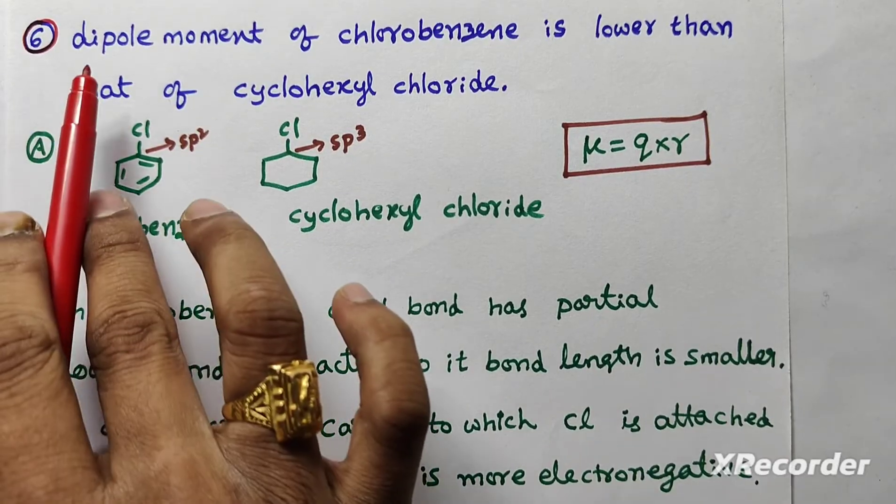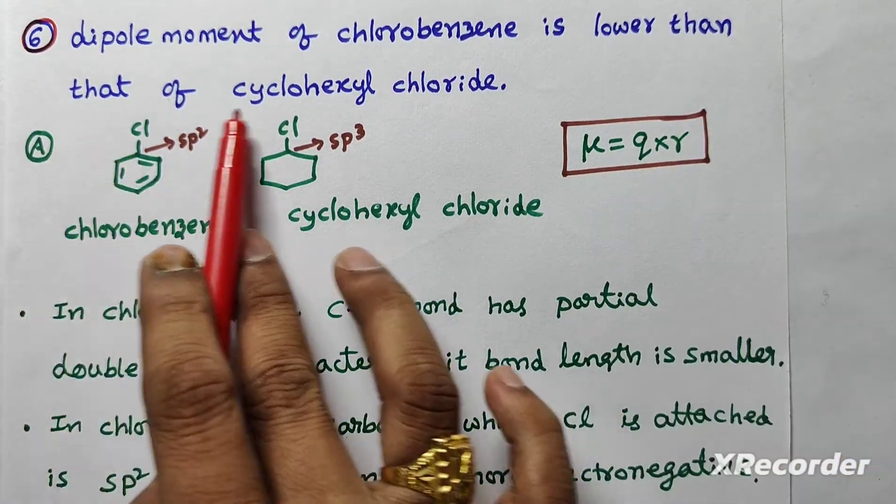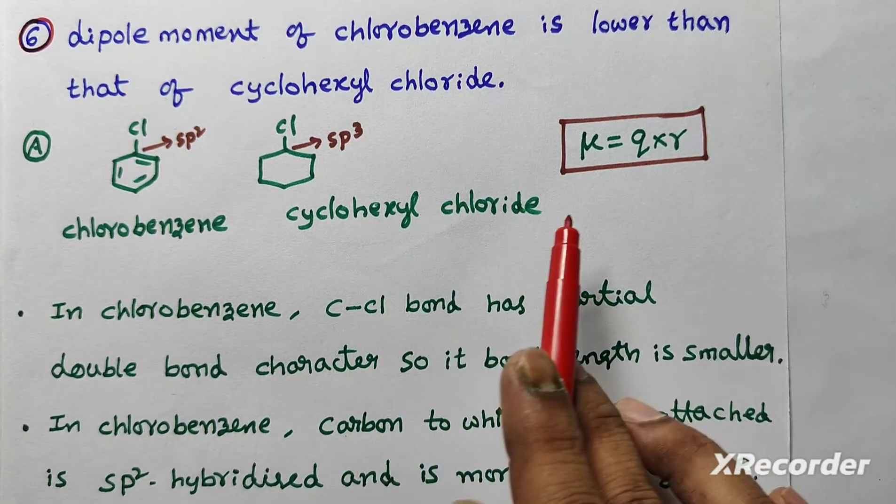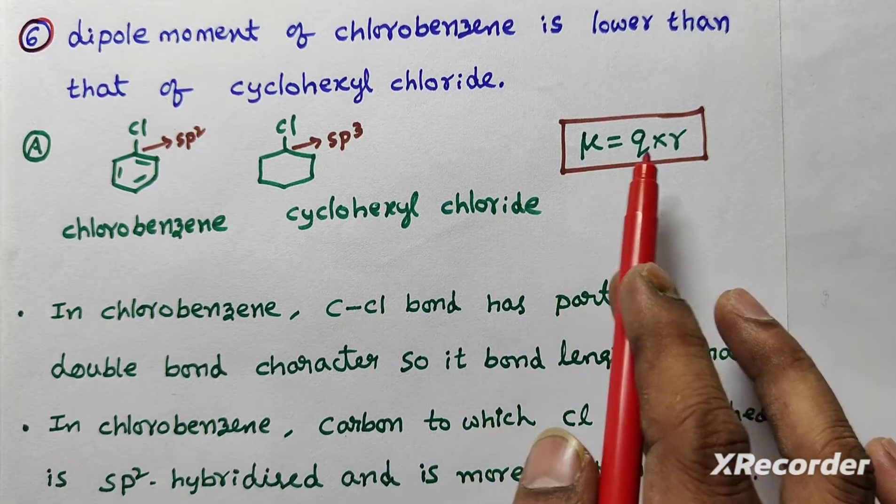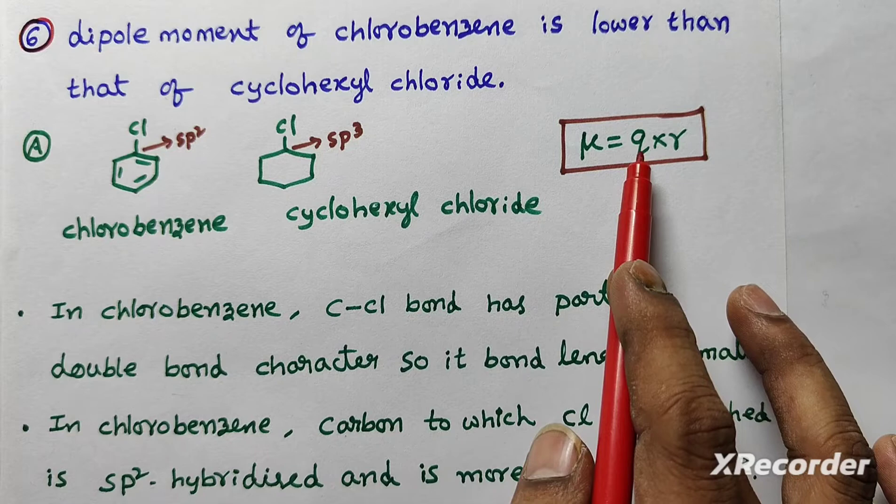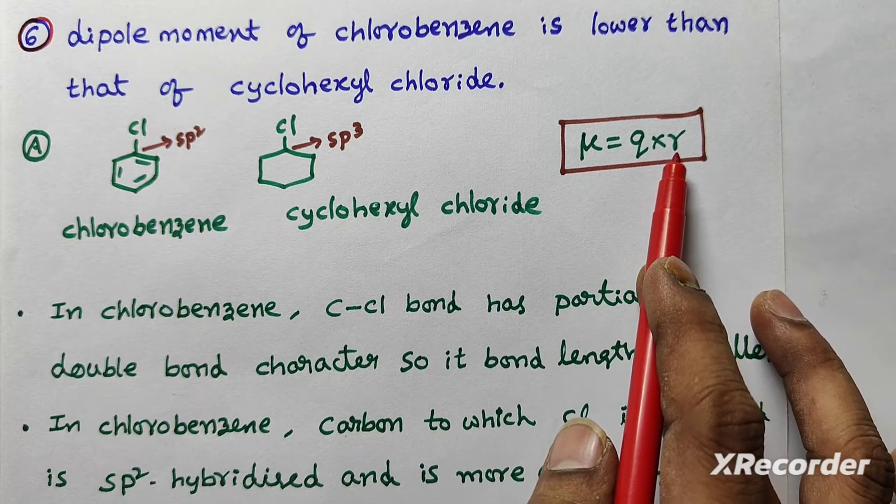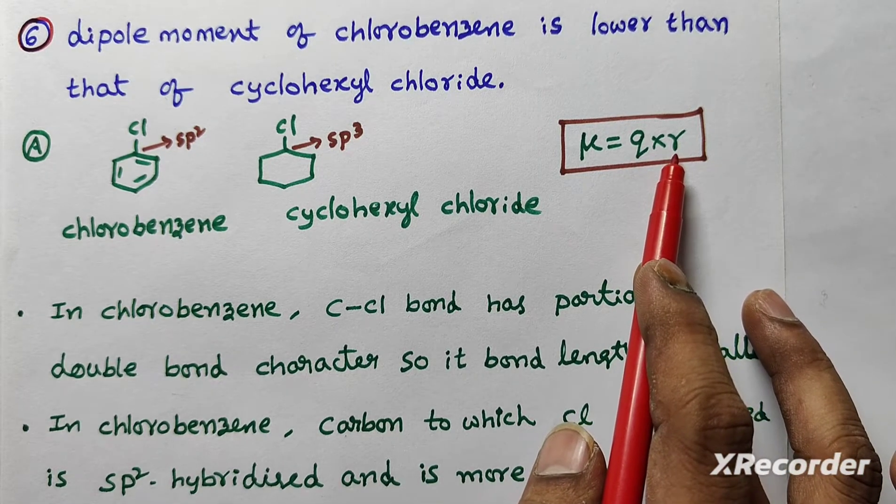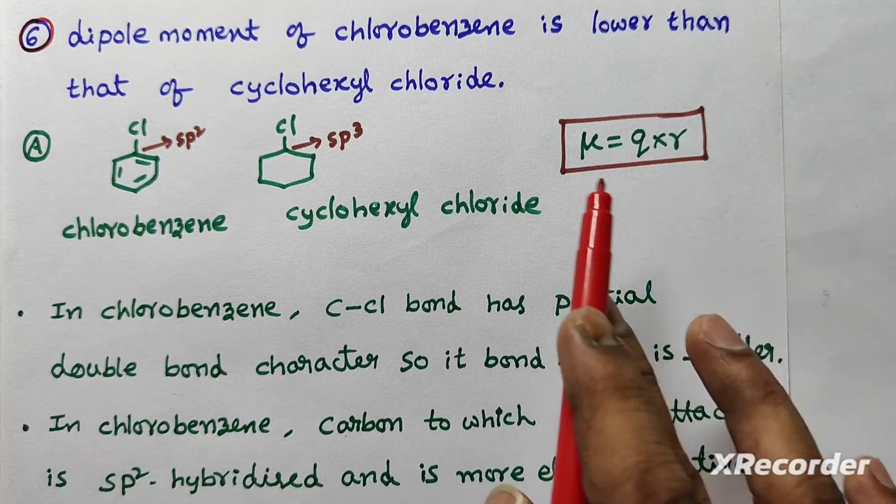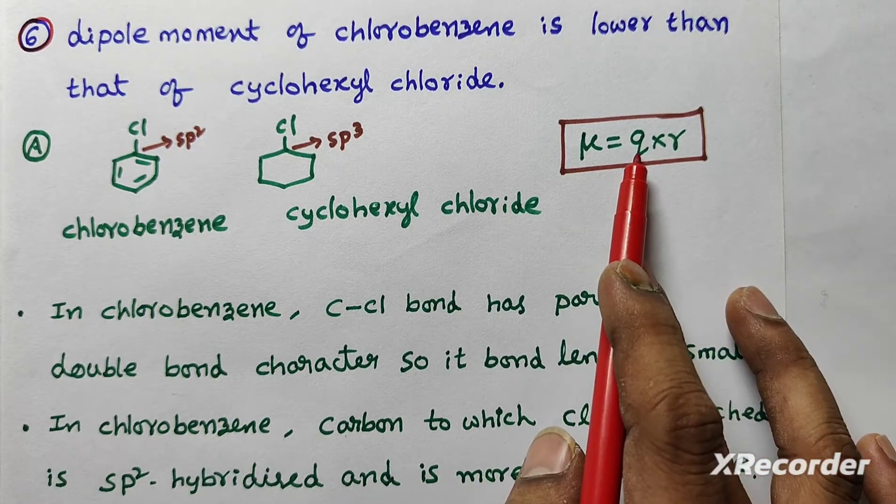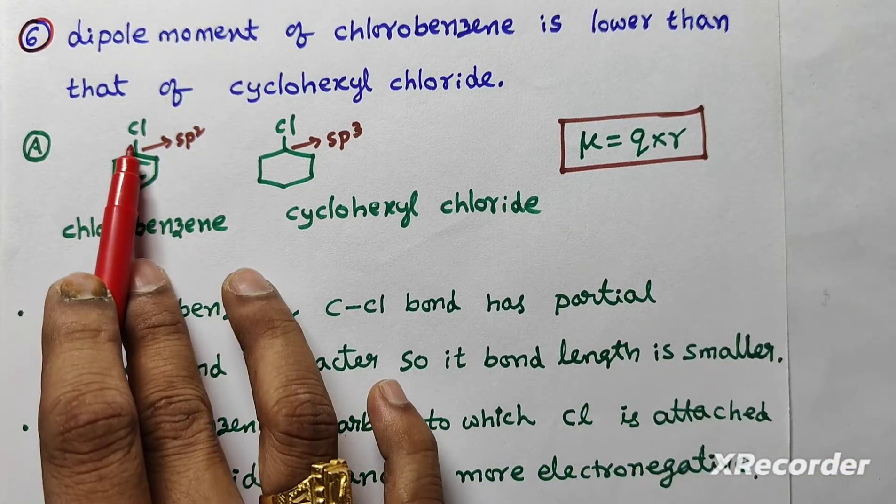Next question, dipole moment of chlorobenzene is lower than that of cyclohexyl chloride. See, dipole moment equals Q into R. Here, Q is charge. R is distance of separation or bond length. And here, dipole moment depends on Q and R.